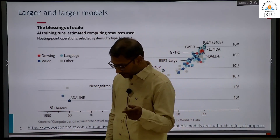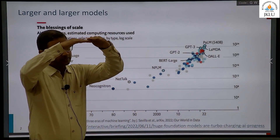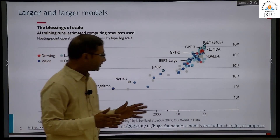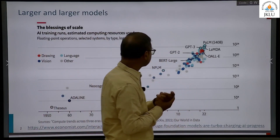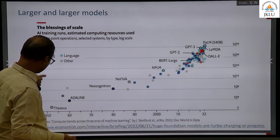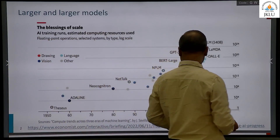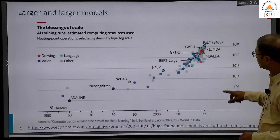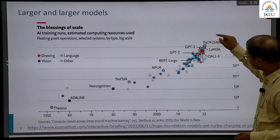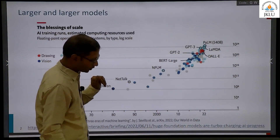There is yet another change in a couple of architectures where they take layer norm before feeding the input. Changes as minor as these have been there. So from the 1950s to 2022, you can see that all these models we talk about today are huge.